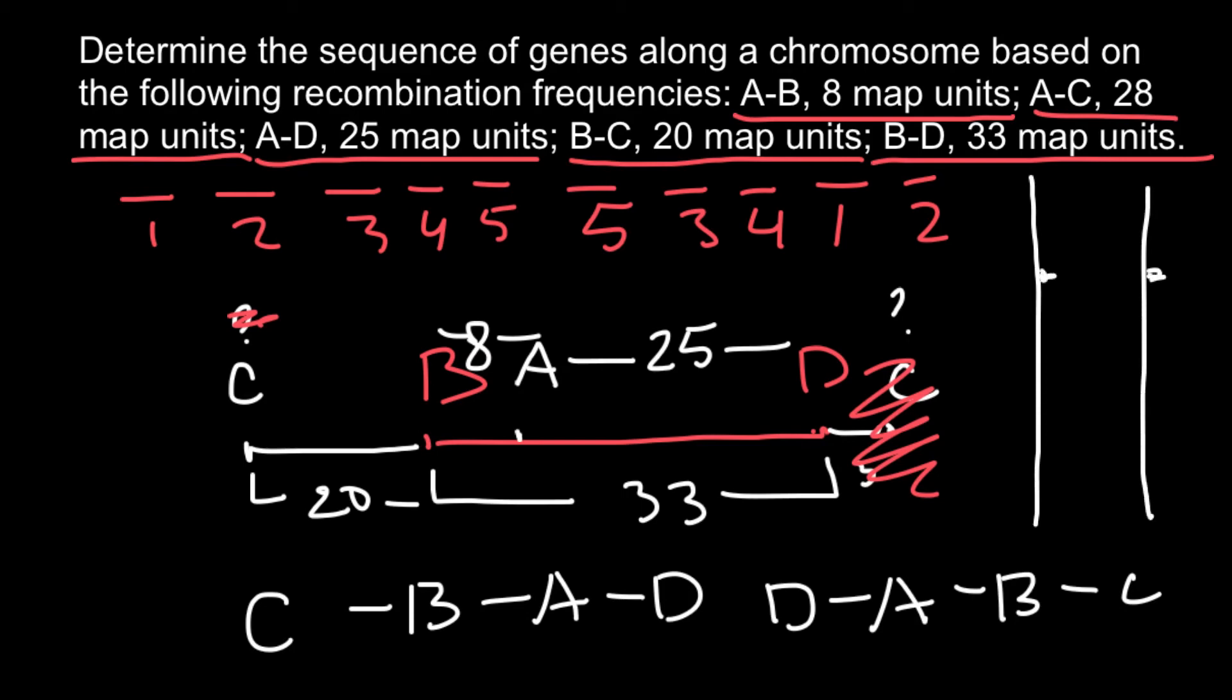But we don't know how these genes lay on the chromosome relative to centromere. Once again, the order of the genes can be C-B-A-D or it can be D-A-B-C. So both variants are possible, and we can tell the exact order of the genes on the chromosome relative to centromere if we would have more genes on the other arm of the chromosome. Then we would be able to tell exact order of the genes.